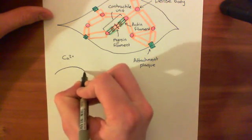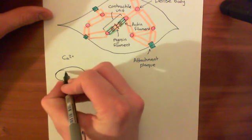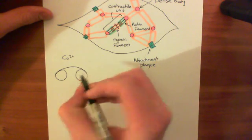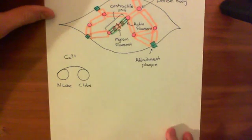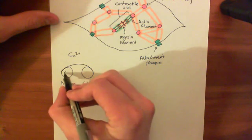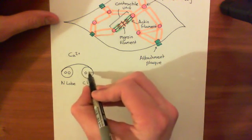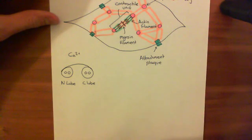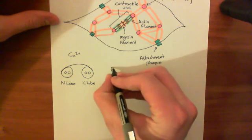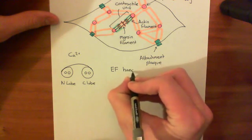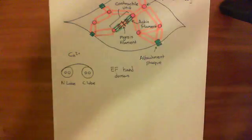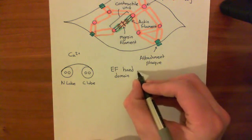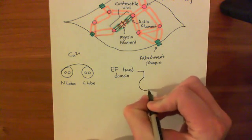Let me show you the structure of calmodulin. In cartoons, it's usually shown with two lobes: the N-lobe and the C-lobe. Both of these lobes have calcium binding sites on them — they have two calcium binding sites each. These calcium binding sites are specifically what are known as EF-hand domains. An EF-hand domain is a polypeptide structure — a protein structure which is capable of binding and responding to calcium.